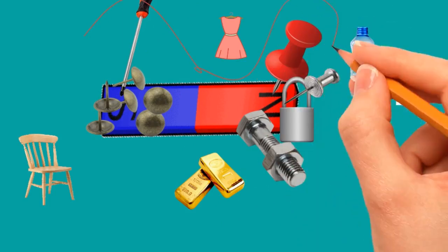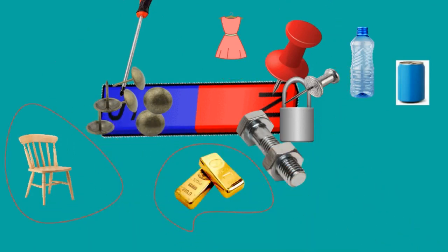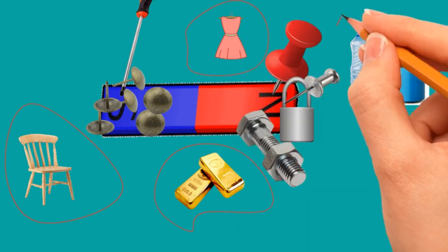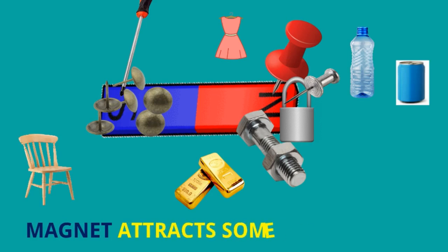But this chair or gold or fabric, plastic bottle, can, these all are not attracted by the magnets. Gold and the can which is made of tin, these are metals but they are not attracted by magnets. So we can easily say that magnet attracts some metals only.